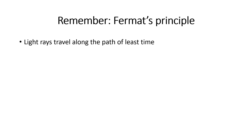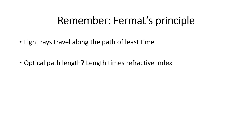Fermat's Principle says that light rays travel along the path of least time. We should also clearly define what we mean by path. The optical path length is defined as length times refractive index, so it's not simply a length.